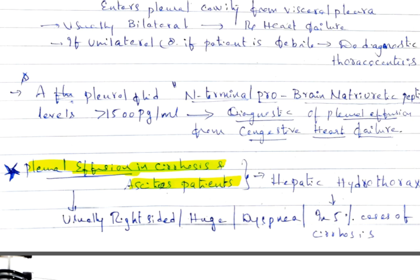If unilateral or if the patient is febrile, then you have to go for diagnostic thoracocentesis because generally it is bilateral in heart failure. Pleural fluid N-terminal pro-brain natriuretic peptide levels greater than 1500 picograms per ml is diagnostic of pleural effusion from congestive heart failure. This is a NEET SS bit, also NEET PG bit.